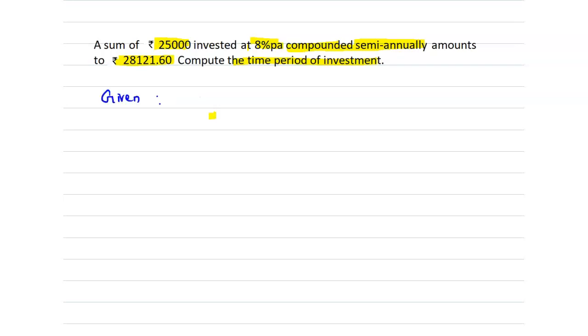The principal P is given as 25,000 rupees, and the total amount at the end of the time period is given as 28,121 rupees 60 paise.